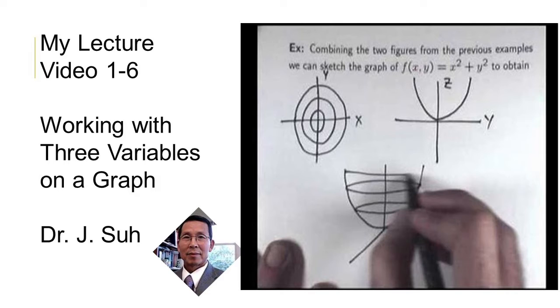We've seen how economists use graphs to represent relationships between two variables. Now we'll see how an economist can represent a relationship among three variables in a two-dimensional graph. The trick is you only change two variables at a time.